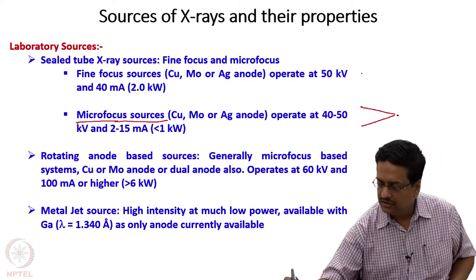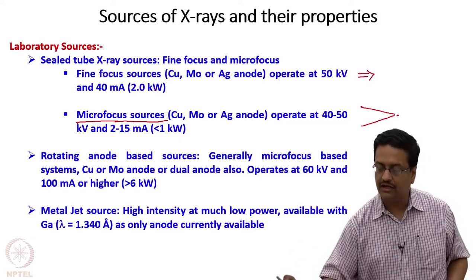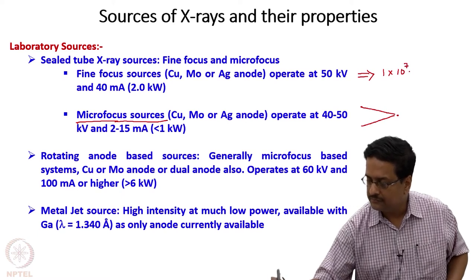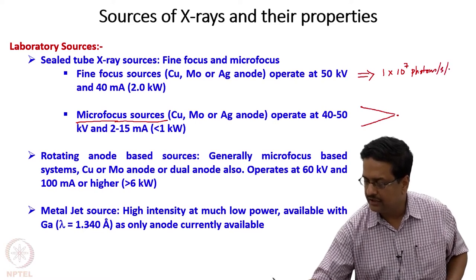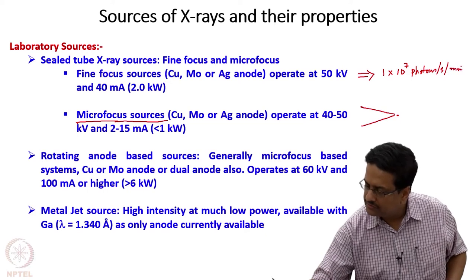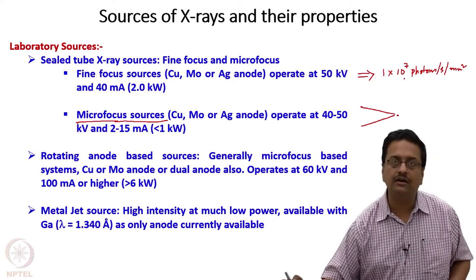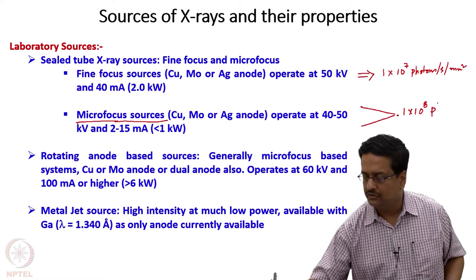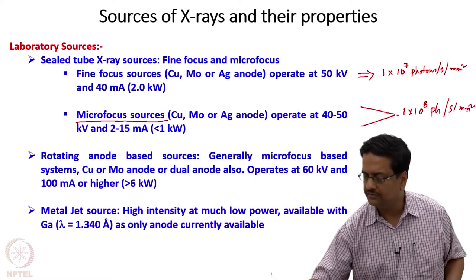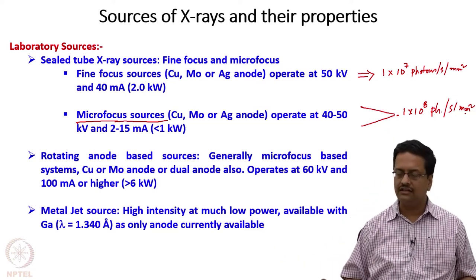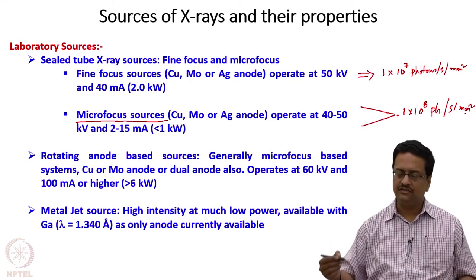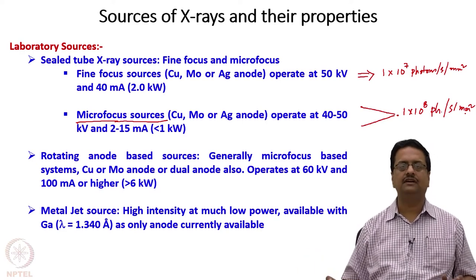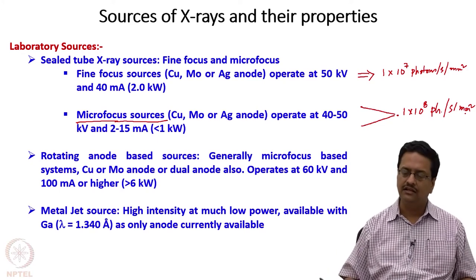As a result of this focusing, the intensity of the beam on the crystal increases. If we assume the intensity from a standard source on the crystal is about 1×10⁷ photons per second per square millimeter, micro focus sources give about 10 times increase in intensity on the crystal. As a result, data collection time will be reduced significantly — with micro focus sources we can collect data much faster instead of spending several hours using a standard X-ray tube.